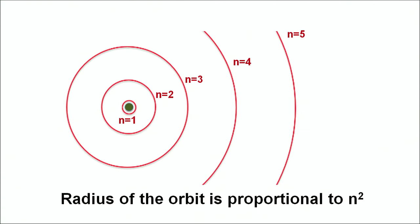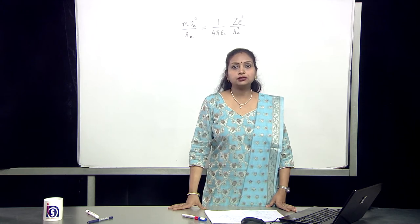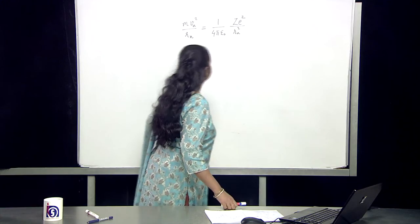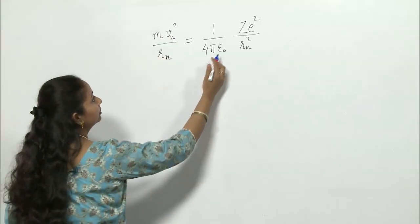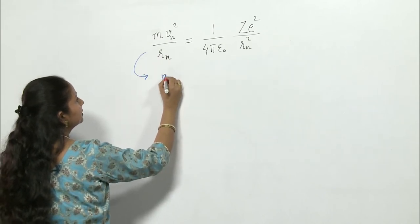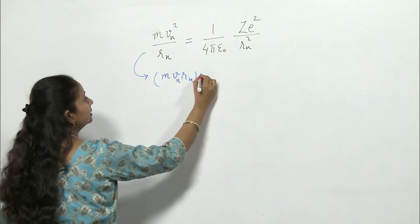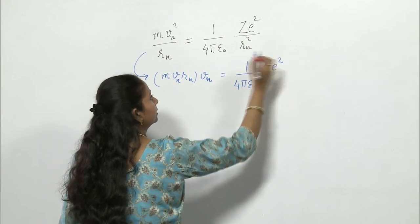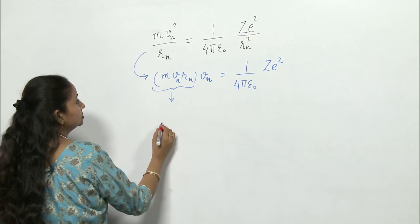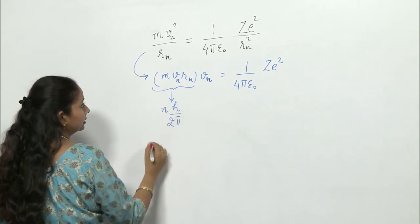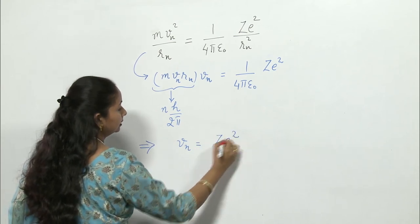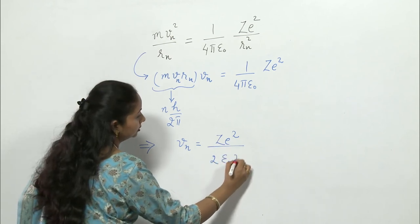This diagram represents the radius of orbits varying with n, from n = 1 to n = 5. In order to obtain the velocity of electron in the n-th orbit, we again start with the first equation in which centripetal force equals Coulomb force. This equation can be rewritten as mvrn × vn = (1 / 4πε₀) × ze². We know that mvn × rn = nh / 2π. After substituting this value, we get vn = ze² / (2ε₀nh).